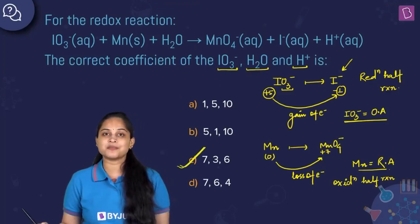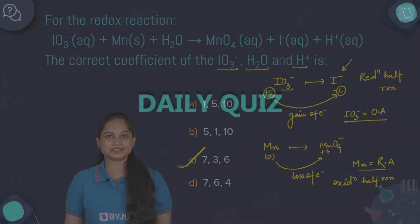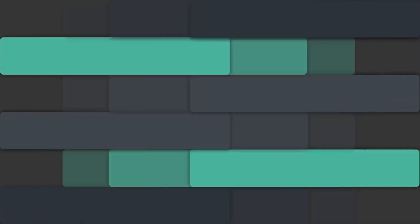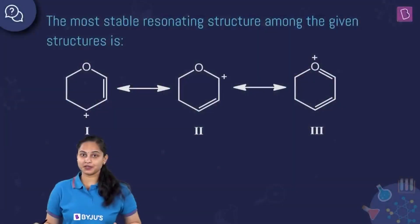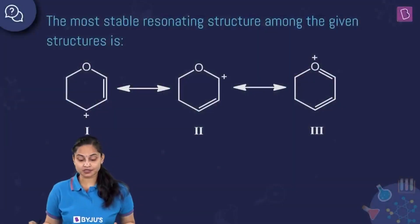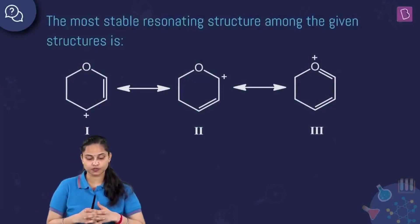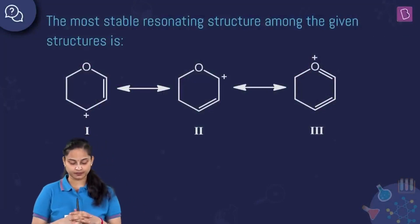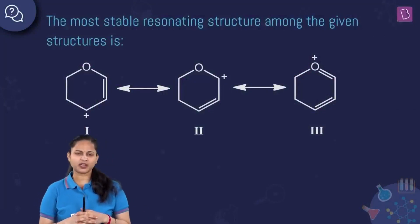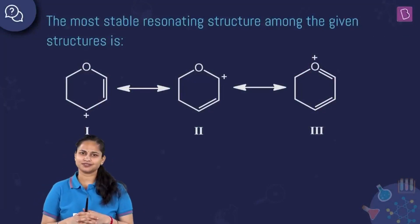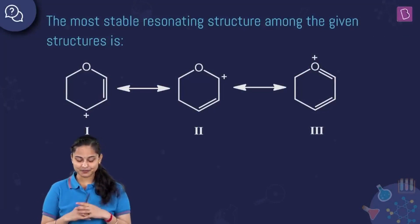Option number C is the right answer for this question. The next question asks about the most stable resonating structure among the given structures.